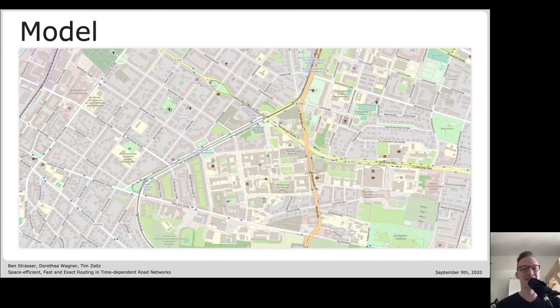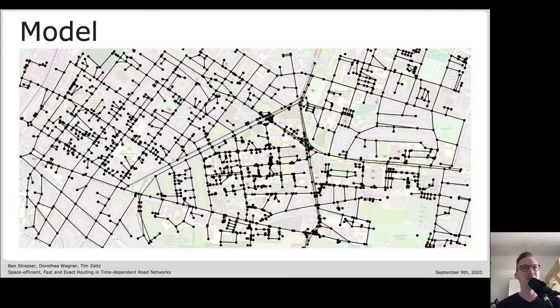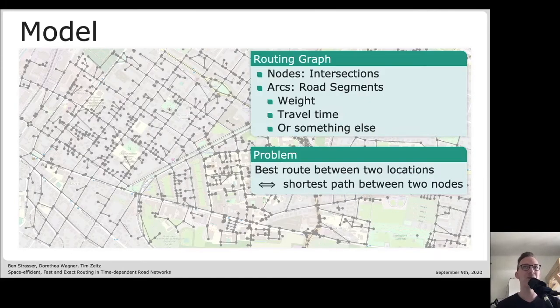If we want to model a road network such as the one you see in the example here, we can do that as a graph where intersections become nodes and road segments between the intersections become arcs. With each arc there is an associated weight which in our case is the travel time. Then finding a good route becomes the classical problem of finding the shortest path between two nodes in a graph.